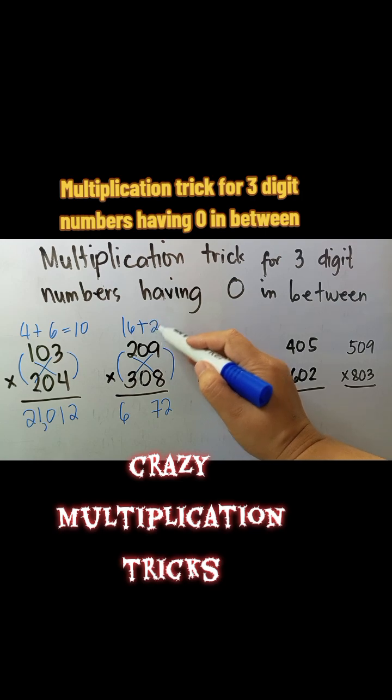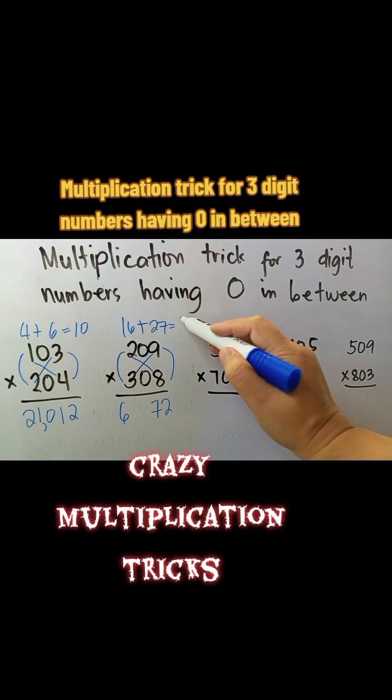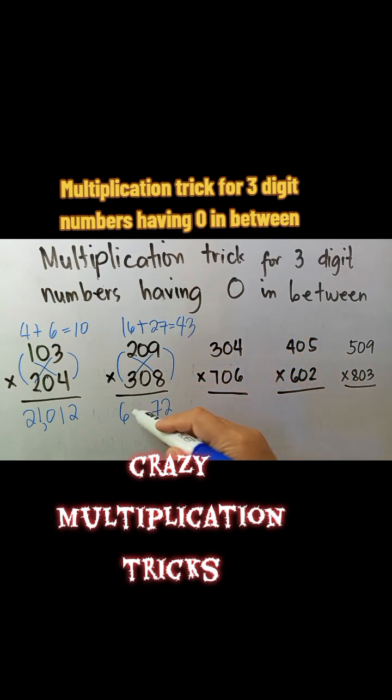For the numbers in between, we cross-multiply the first and the third digit, same with the third and the first digit. Then we add the results. Then we write it to the space in between our final answer.